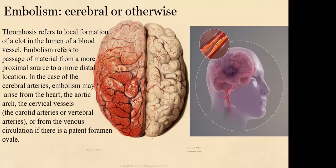In the case of the cerebral arteries, embolism may arise from the heart, as it usually does, the aortic arch, the cervical vessels like the carotid and vertebral arteries, or from the venous circulation if there is a patent foramen ovale.